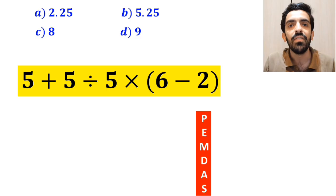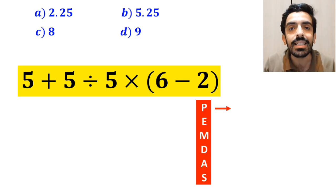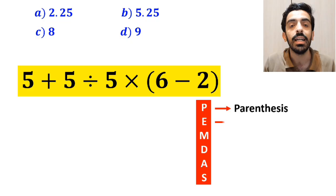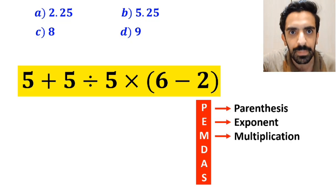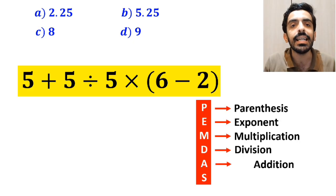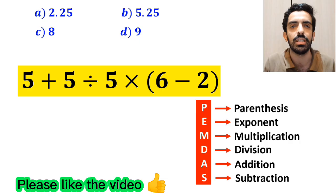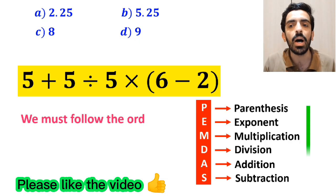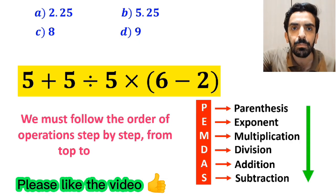To solve this problem, we must follow the PEMDAS rule. And this rule, P stands for parenthesis, E stands for exponent, M stands for multiplication, D stands for division, A stands for addition, and S stands for subtraction. We must follow the order of operations step by step from top to bottom.